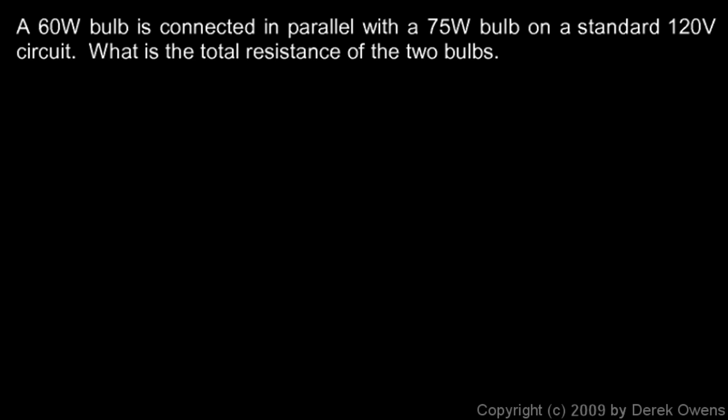In this problem, we're told that a 60 watt bulb is connected in parallel with a 75 watt bulb on a standard 120 volt circuit, and we're told to find the total resistance of the two bulbs. Now, it doesn't look like a whole lot of information is given here, but it turns out we can find the answer, the total resistance, based simply on the information given in the problem.